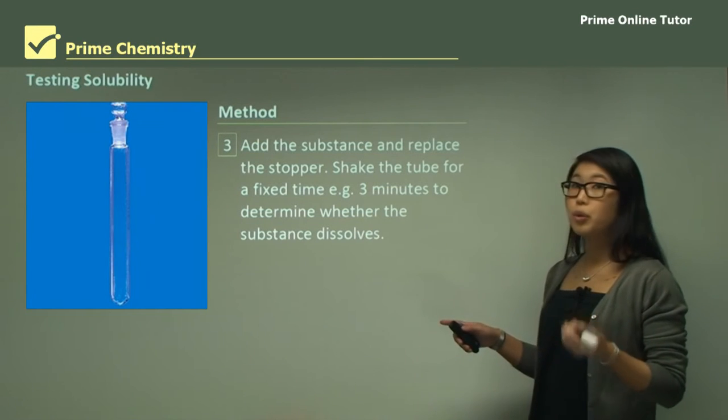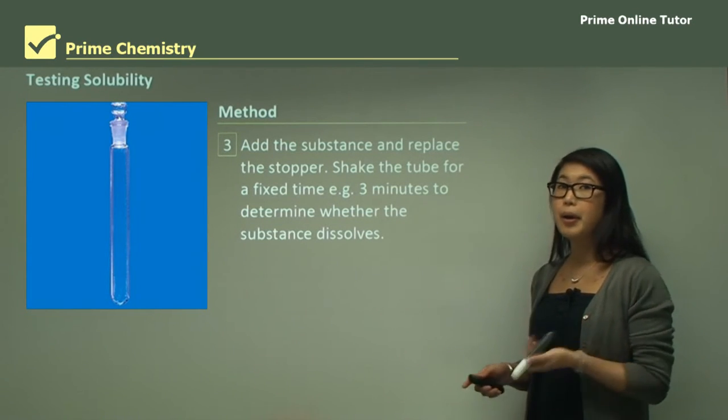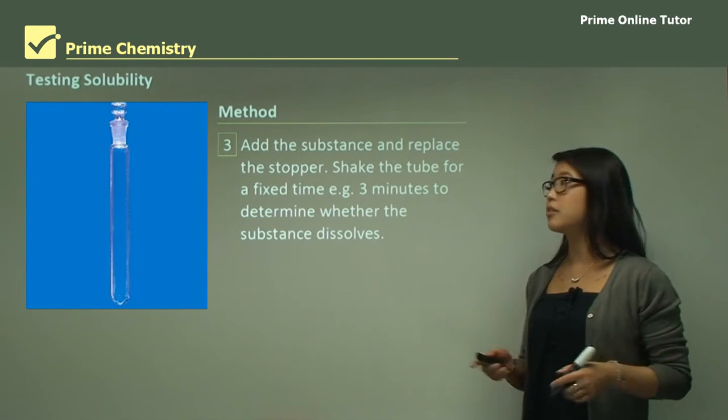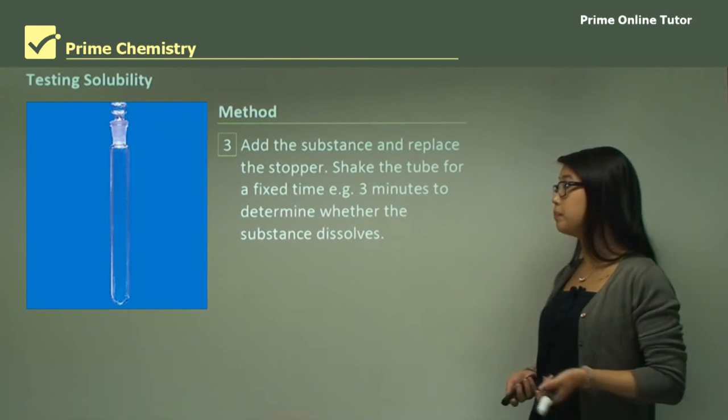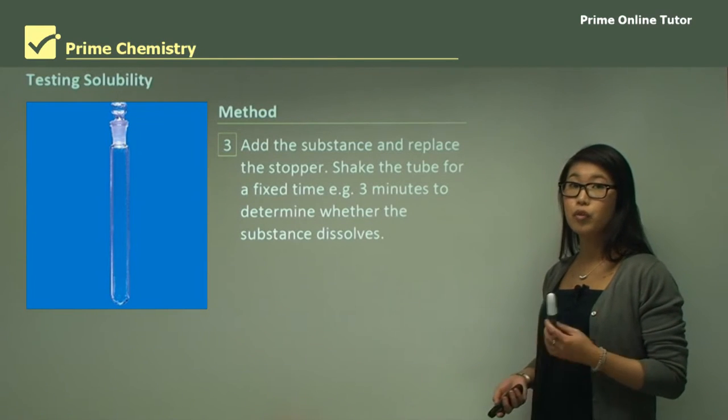Add the substance to the water, put the stopper on, and shake the test tube for a set amount of time. Make sure you're consistent with all your substances. If you're going to do 3 minutes on the first one, make sure you do 3 minutes on all of them, and then we can determine whether the substance will dissolve in water or not.